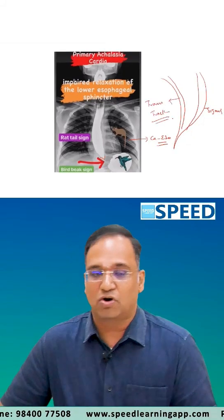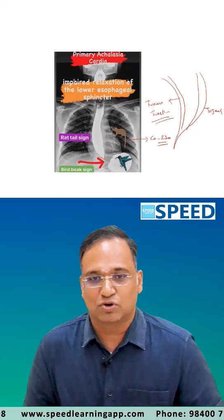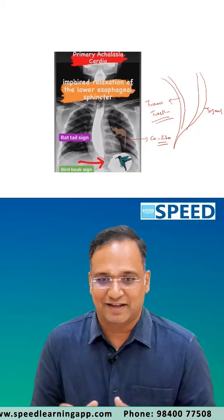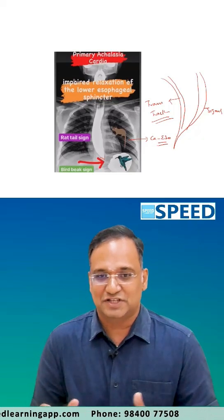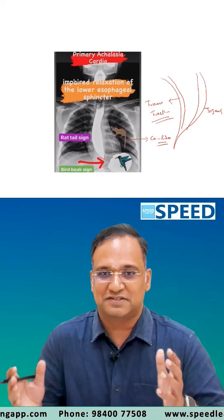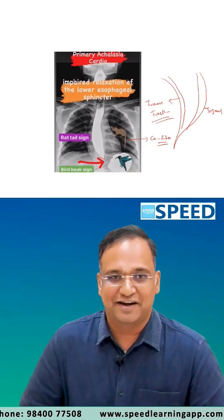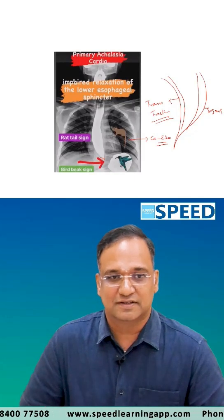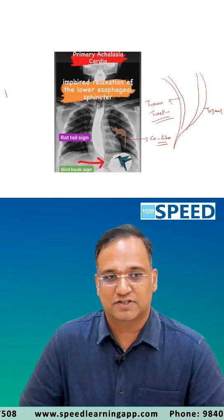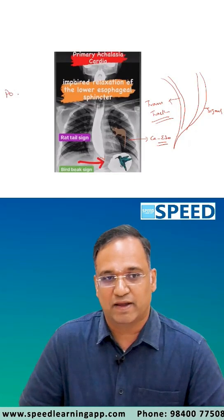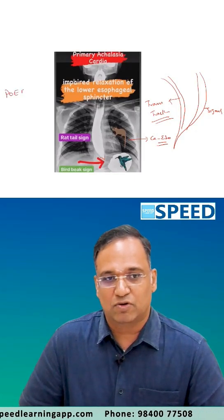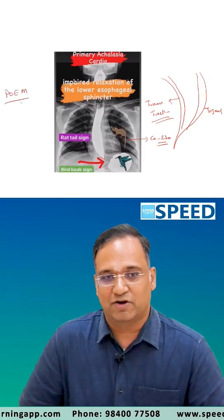Achalasia cardia is caused by a tonically contracted lower esophageal sphincter with failure of relaxation and aperistalsis in the body of the esophagus. The treatment of choice today is POEM — peroral endoscopic myotomy.